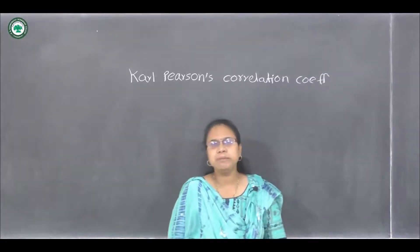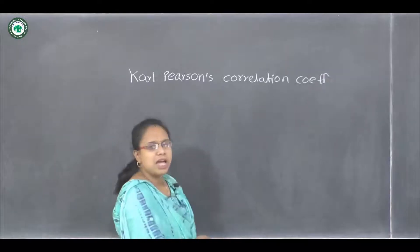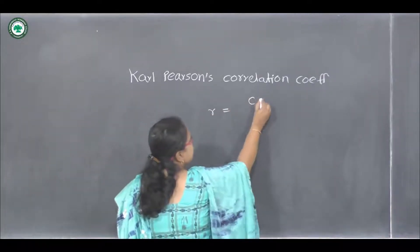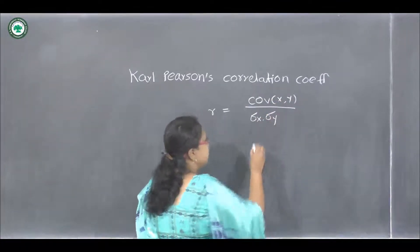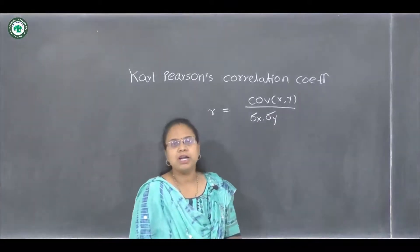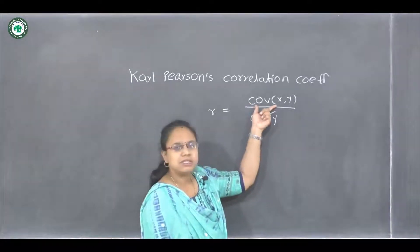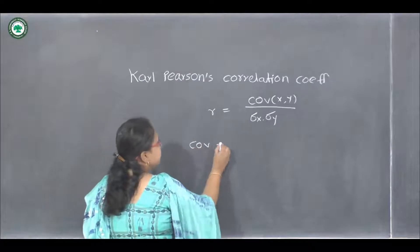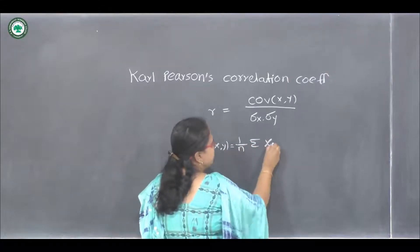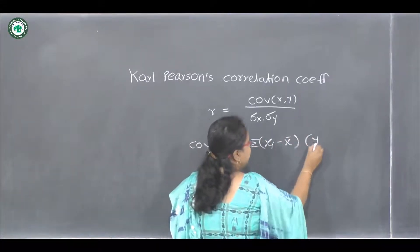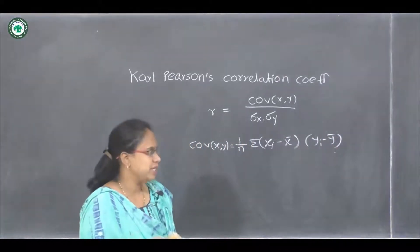To overcome the demerits of scatter diagrams, we use Karl Pearson's coefficient, given by R equals covariance between x and y divided by sigma x into sigma y, where sigma x and sigma y are the standard deviations of x and y. Covariance is defined as 1 upon n, summation of (xi minus x̄) into (yi minus ȳ). This is the formula for covariance which we have already studied.